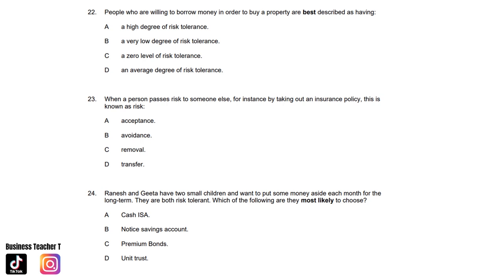Question twenty-two: People who are willing to borrow money in order to buy a property are best described as having: A. A high degree of risk tolerance. B. A very low degree of risk tolerance. C. A zero level of risk tolerance. Or D. An average degree of risk tolerance. And the answer is D. An average degree of risk tolerance. Question twenty-three: When a person passes risk to someone else — for instance by taking out an insurance policy — this is known as: A. Acceptance. B. Avoidance. C. Removal. Or D. Transfer. And the answer is D. Transfer.